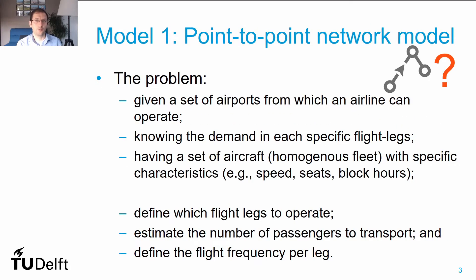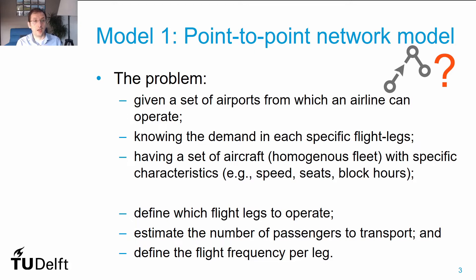Let's start with a point-to-point network. What is the problem that I'm trying to solve there? I have a set of airports from which I want to operate, and I know the demands in each flight line between these airports. I have a set of aircrafts, a homogeneous fleet for this case, and this aircraft has specific characteristics,